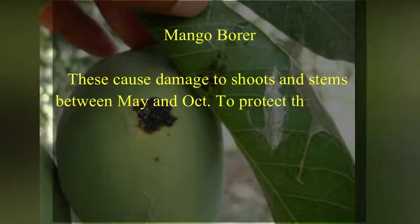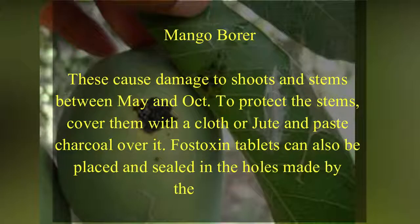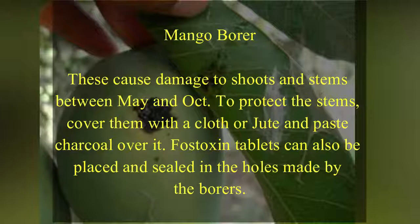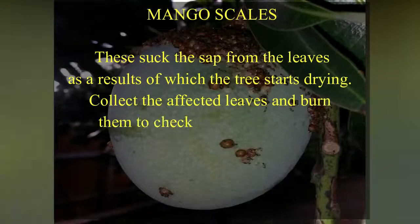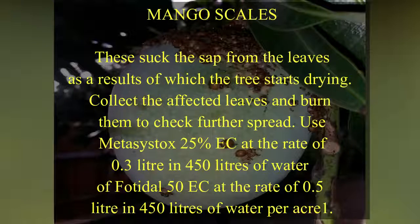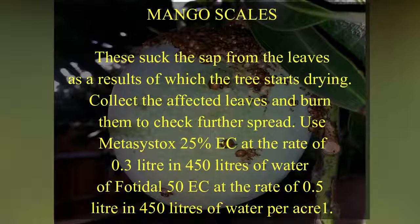Mango borer: these cause damage to shoots and stems between May and October. To protect the stems, cover them with cloth or jute and paste charcoal over it. Phostoxin tablets can also be placed and concealed in the holes made by the borers. Mango scales: these suck the sap from the leaves, causing the tree to start drying. Collect the affected leaves and burn them to check further spread. Use Metasystox 25% at the rate of 0.3 liter in 450 liters of water per acre.